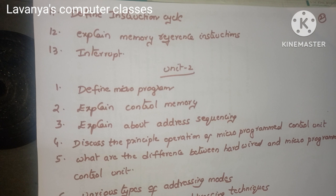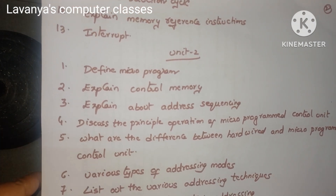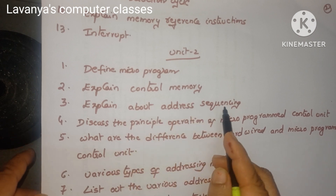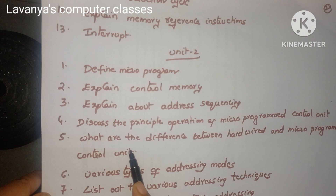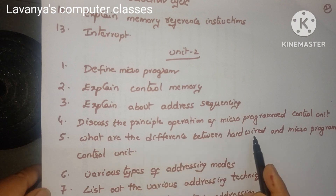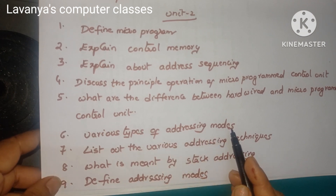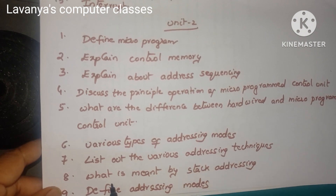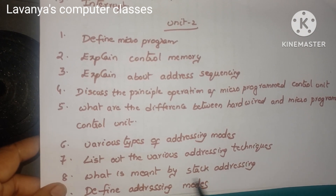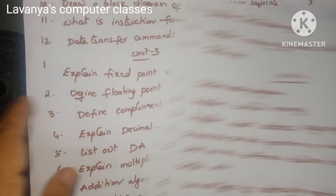Unit 2 questions are: define micro program. Explain control memory. Explain about address sequencing. Discuss the principal operations of micro programming and the control unit. What are the differences between hardwired and micro programmed control unit? Various types of addressing modes — an important question. List out the various addressing techniques. What is meant by stack addressing? Define addressing modes — addressing mode is a very important question for short answer type also.